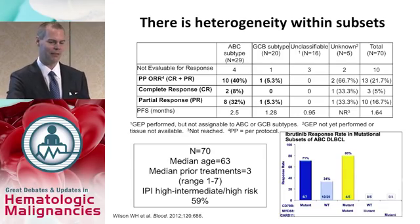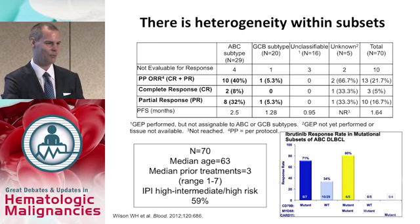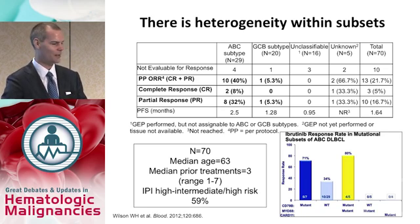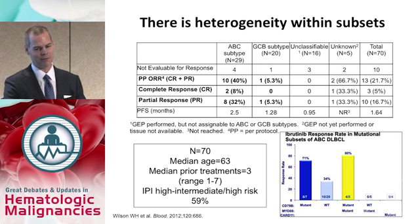Even if we could use gene expression profiling to effectively differentiate germinal center from ABC subtypes, the targeted therapies aren't perfect. We know ibrutinib has some activity in the ABC subtype, and bortezomib has some activity in the ABC subtype, but it will never be 100%. There are people with downstream mutations below BTK that will make ibrutinib ineffective. So even under certain circumstances where gene expression profiling could be used, ibrutinib adds nothing over R-CHOP other than toxicity.